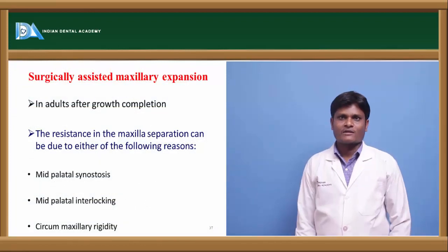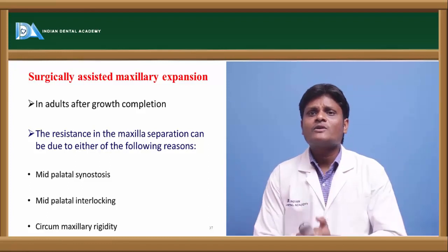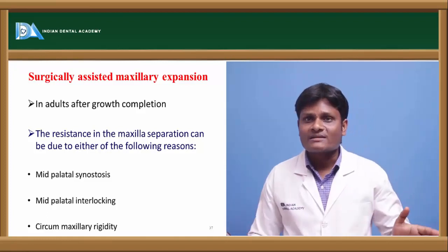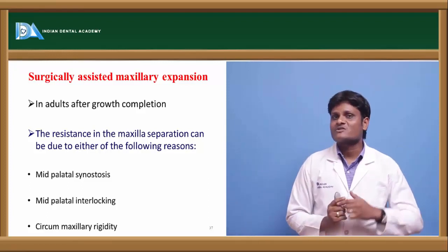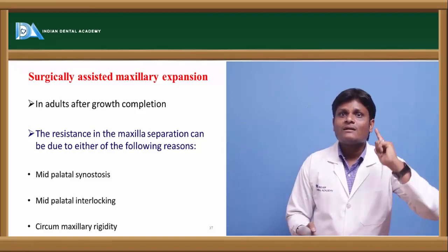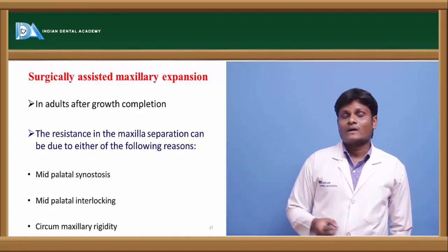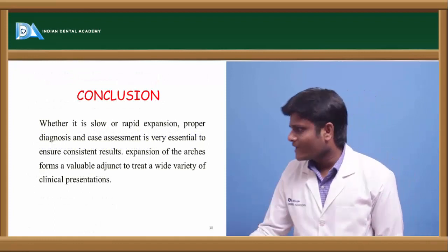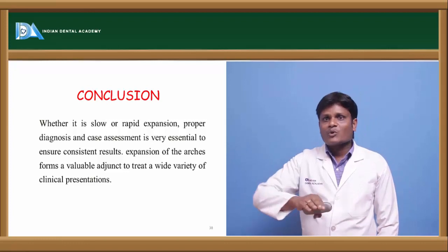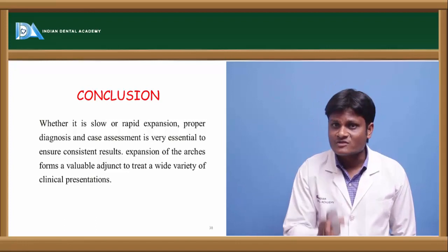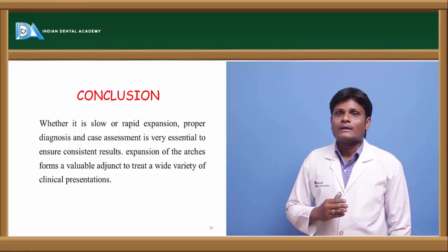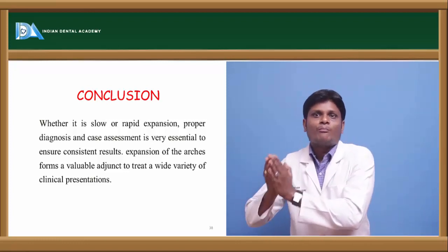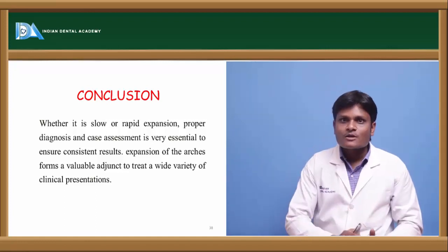Surgically assisted maxillary expansion: In an adult patient where sutures are completely ossified, it is very difficult to skeletally expand the maxilla. In cases of severe narrowing, the maxilla must be freed of its circummaxillary sutural attachments surgically, and then expansion is achieved with a rapid maxillary expansion appliance. This is called surgically assisted rapid maxillary expansion (SARME) or surgically assisted rapid palatal expansion. Whether slow or rapid expansion, proper diagnosis, proper appliance selection, proper instructions to the patient, and a standardized activation protocol must be followed.